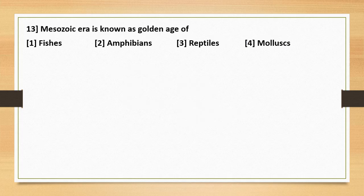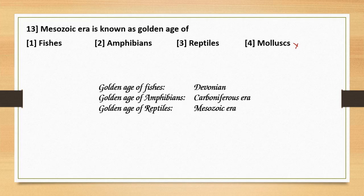Question number 13. The Mesozoic era is known as the golden age of — options: 1. Fishes. 2. Amphibians. 3. Reptiles. 4. Molluscs. The golden age of fishes is the Devonian period. The golden age of amphibians is the Carboniferous period. The golden age of reptiles is the Mesozoic era. So the Mesozoic era is known as the golden age of reptiles. Option 3 is correct.